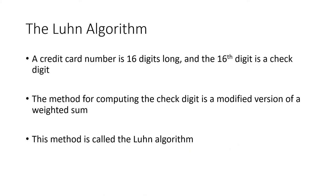The other check digit system to cover is for credit card numbers. A credit card number is 16 digits long, printed in groups of four on the card. The 16th digit — the very last digit — is a check digit. The method used to validate it is called the Luhn algorithm, a modified version of a weighted sum.